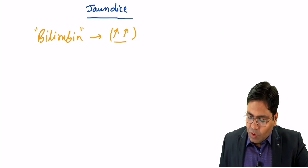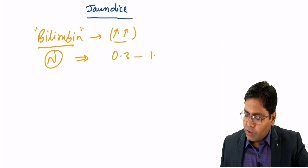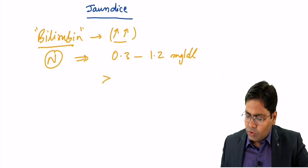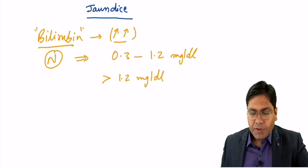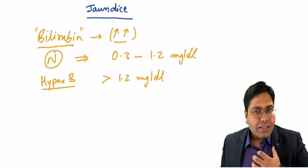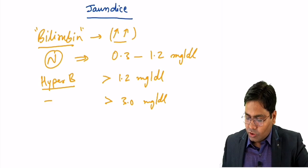Normally, bilirubin level is somewhere between 0.3 to 1.2 milligrams per deciliter in our blood as a concentration. When this is more than 1.2, that condition is hyperbilirubinemia. But when this concentration is very high, that is when it is more than 3 milligrams per deciliter, that condition is jaundice.